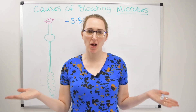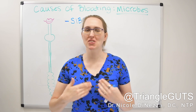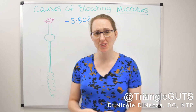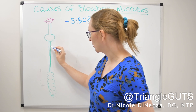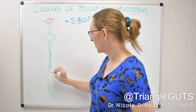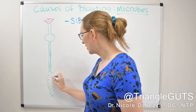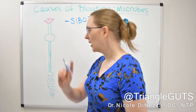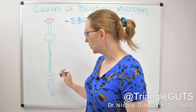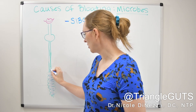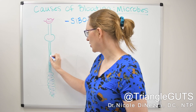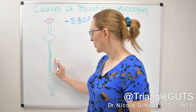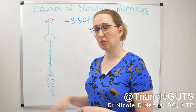What conversation about bugs would be complete on this channel if we didn't first mention SIBO? For those of you who are new, SIBO stands for small intestinal bacterial overgrowth, and it is exactly what it sounds like. Normally there should be a smattering of a few bacteria here or there throughout the small intestine, and the colon should be chock full of bacteria. But in the case of SIBO, you have a larger quantity of bacteria and also a mismatch of good and bad bacteria that starts to creep up into parts of the small intestine where they don't belong.